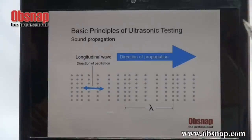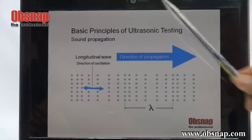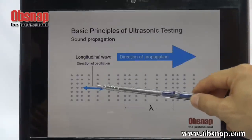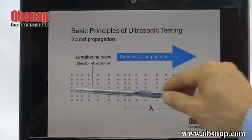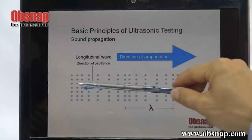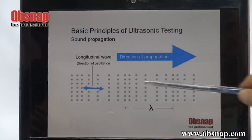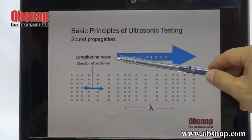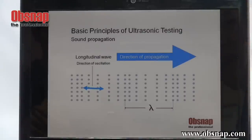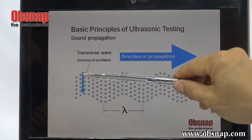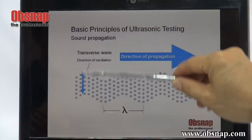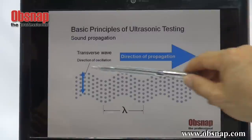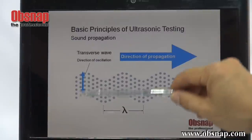Another important thing is about sound propagation. Should the oscillation of the sound wave be in the direction of propagation, we term it as longitudinal wave. And should the oscillation of the sound wave be perpendicular to the direction of propagation, we term it as transverse wave.